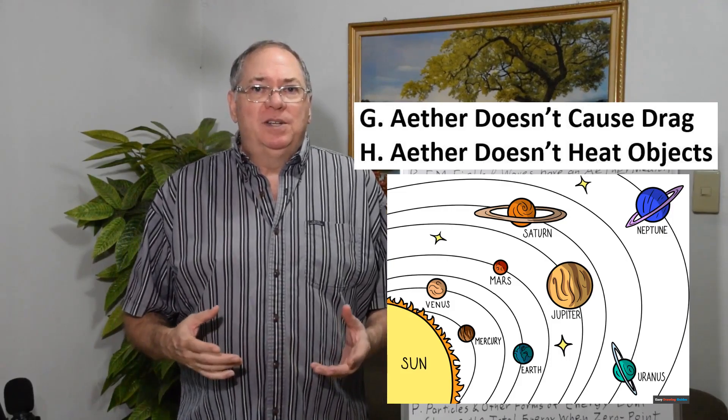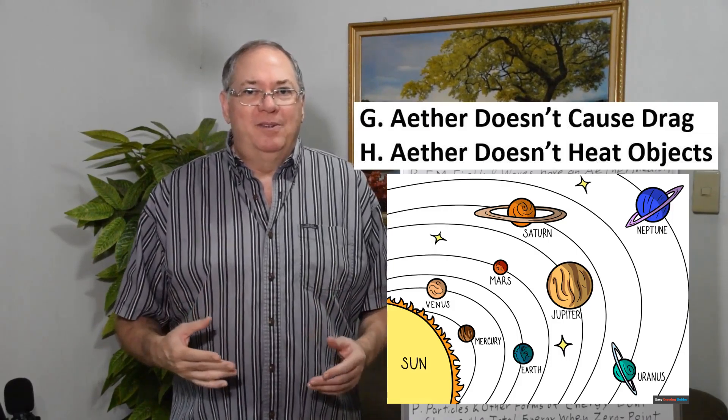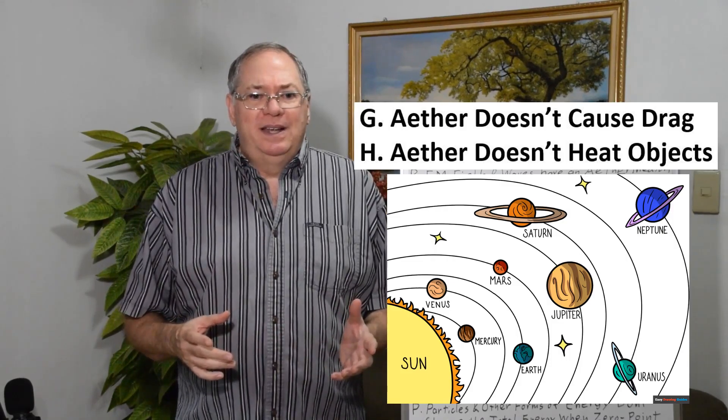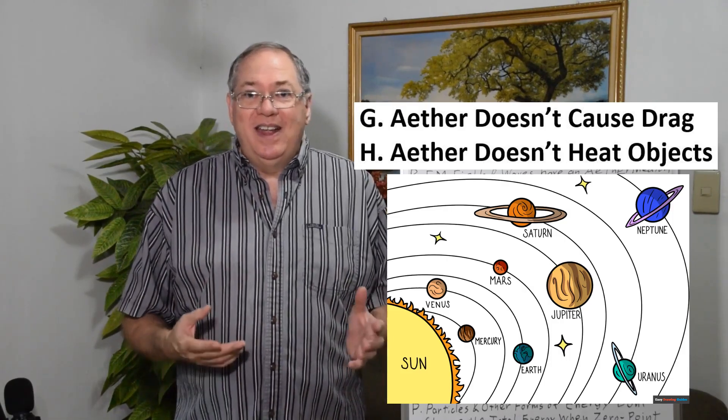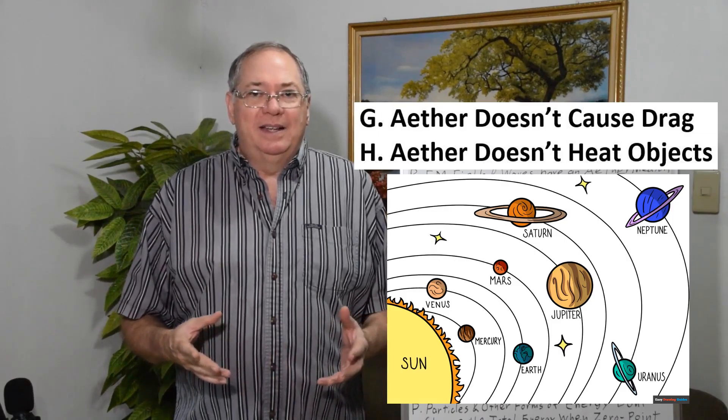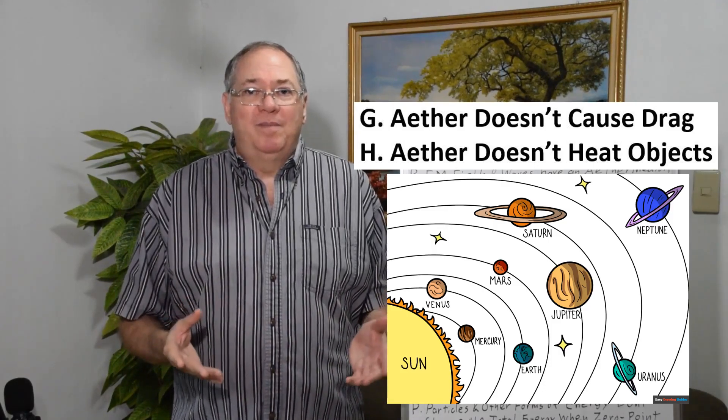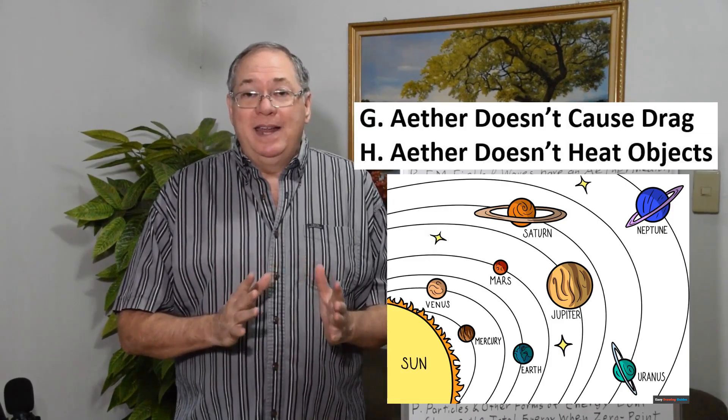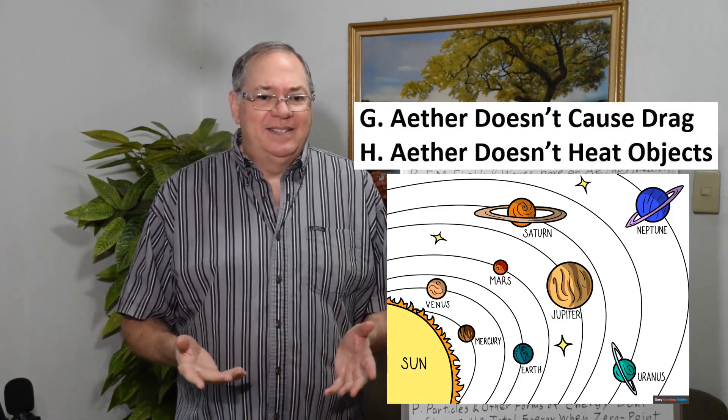And then there's a bunch of false problems that physicists have identified with this type of quantum ether model that aren't really problems. And one is, ether does not cause drag. Another is, ether does not heat objects. Both of these have been used as an opposition to the Fatio-Lasage gravity. And neither one of them has ever been a problem. The Casimir effect exists, and it doesn't cause objects to heat up to the vaporizing point. That's not a thing. It's not real physics.